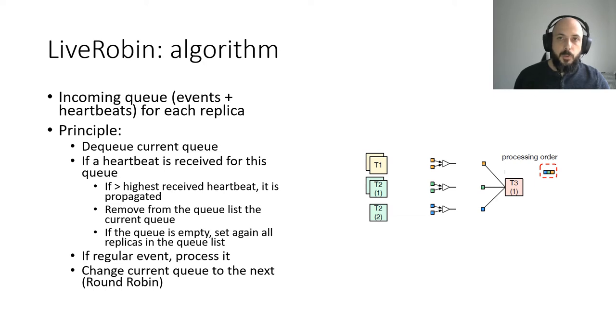We can see on the right the order of processing for T3, from right to left: orange, then green, then blue. A heartbeat comes from the first replica of T2. This replica is removed from the list. Now, only orange and blue events are processed. The same behavior happens when receiving the T1 heartbeat. Now, only blue events are processed. Once all the heartbeats have been received, we process the events as before.